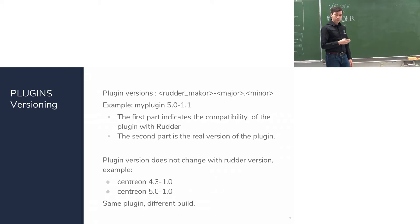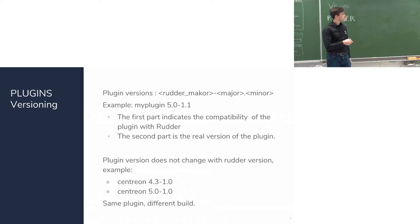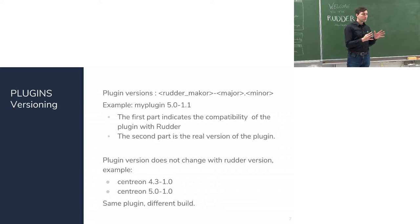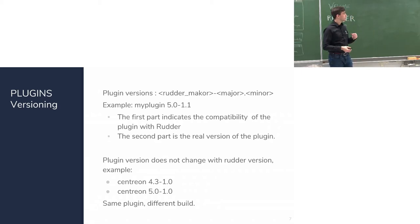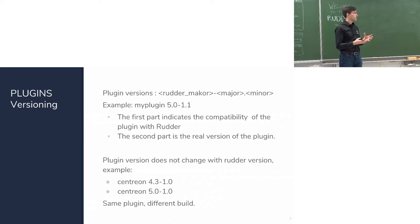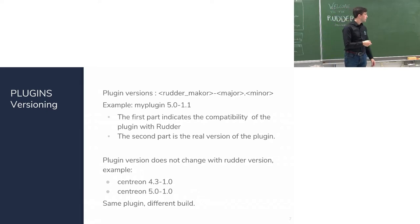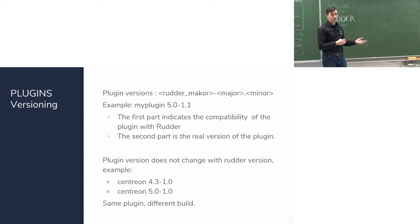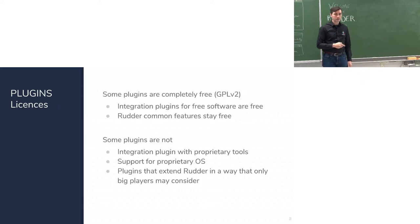A plugin has a version using this scheme: first the Rudder version it is compatible with, then the plugin version. The first part indicates which version of Rudder you should install the plugin on, and the second part is the actual plugin version, incremented each time there's a new release. For example, the Centreon plugin is provided twice — one for each Rudder version — same plugin, different Rudder version.